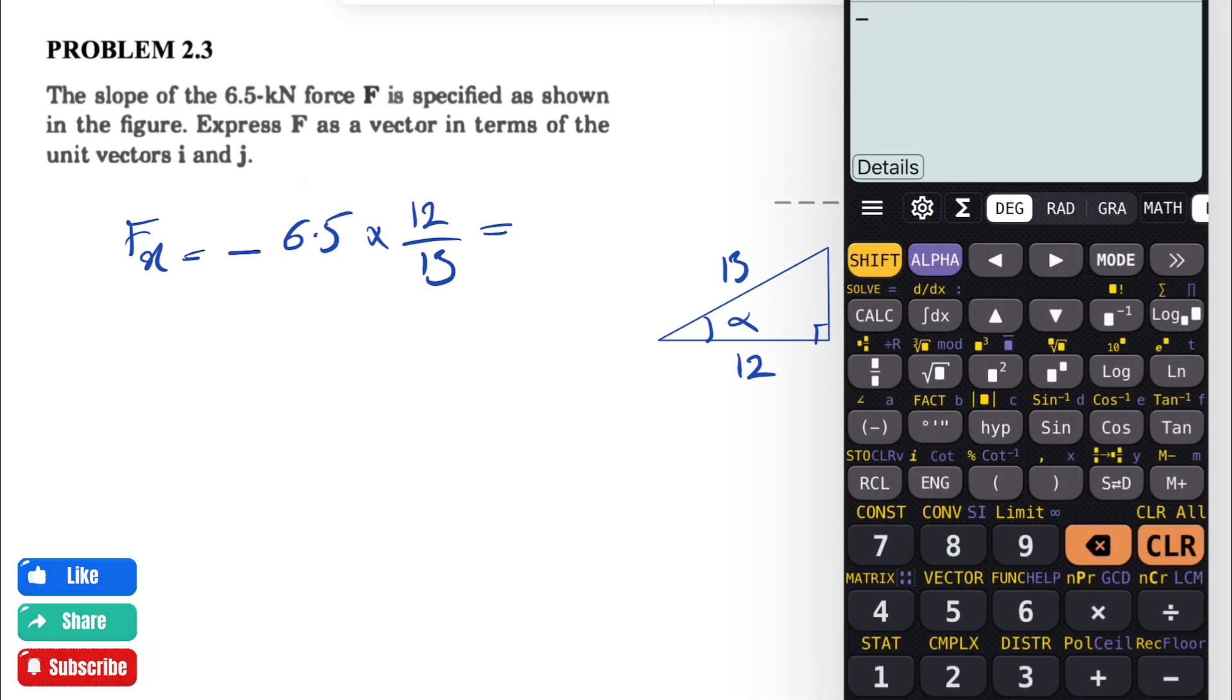So we're going to have minus 6.5 times 12 divided by 13. So this is going to give us minus 6 kilonewtons for Fx.